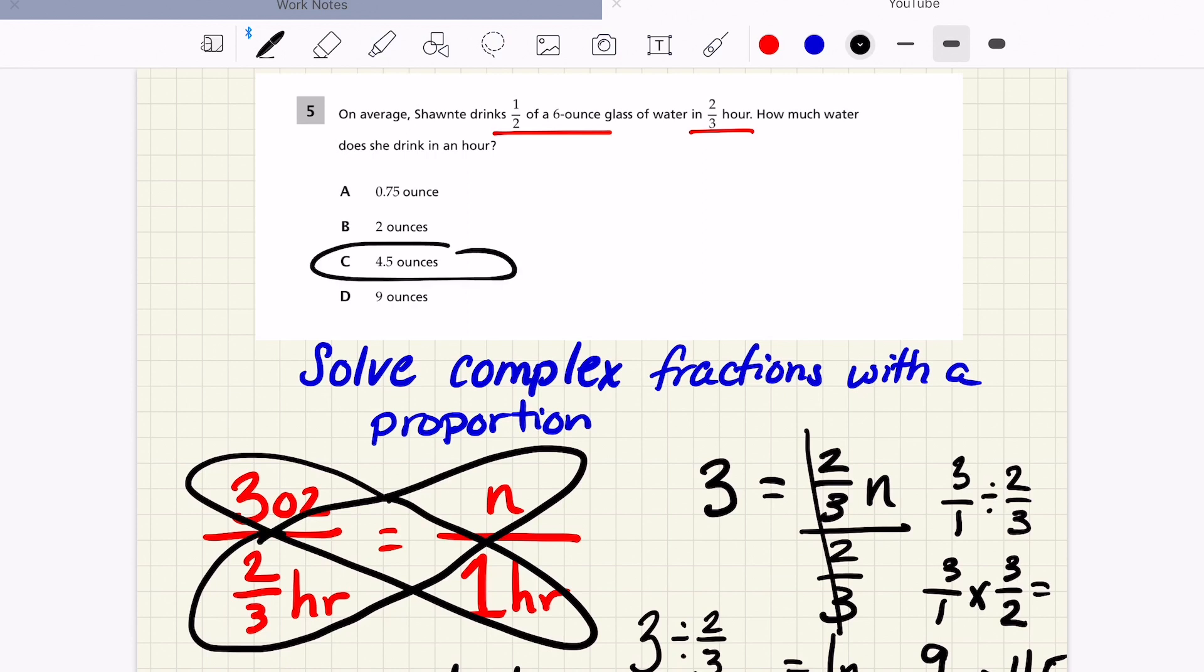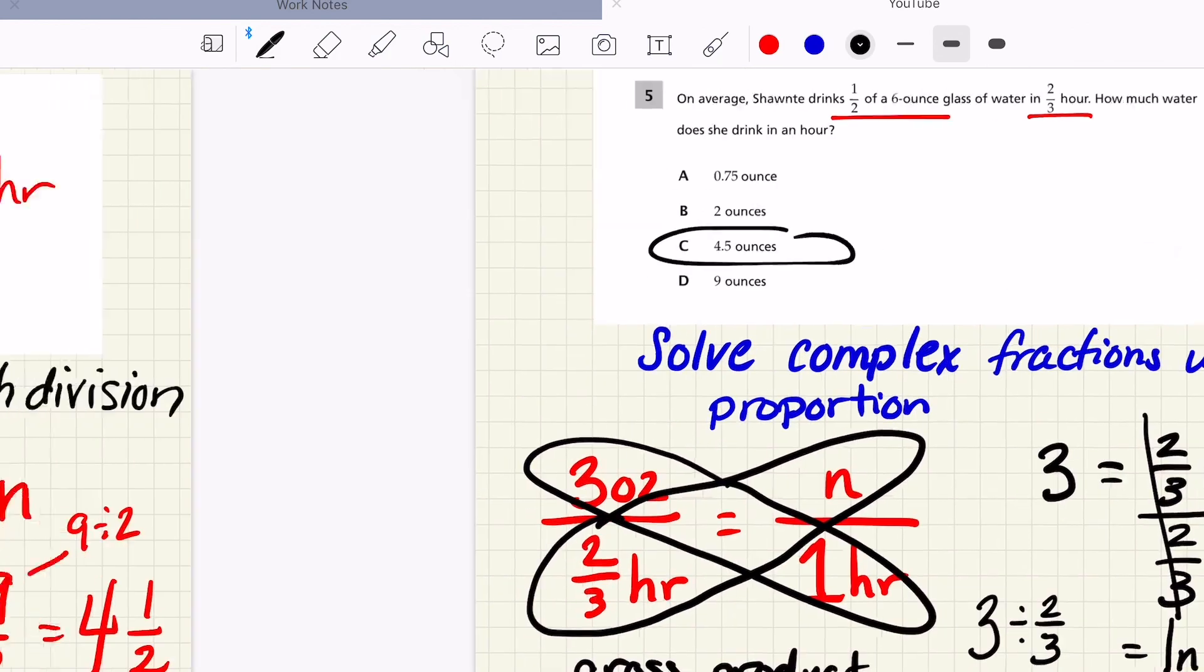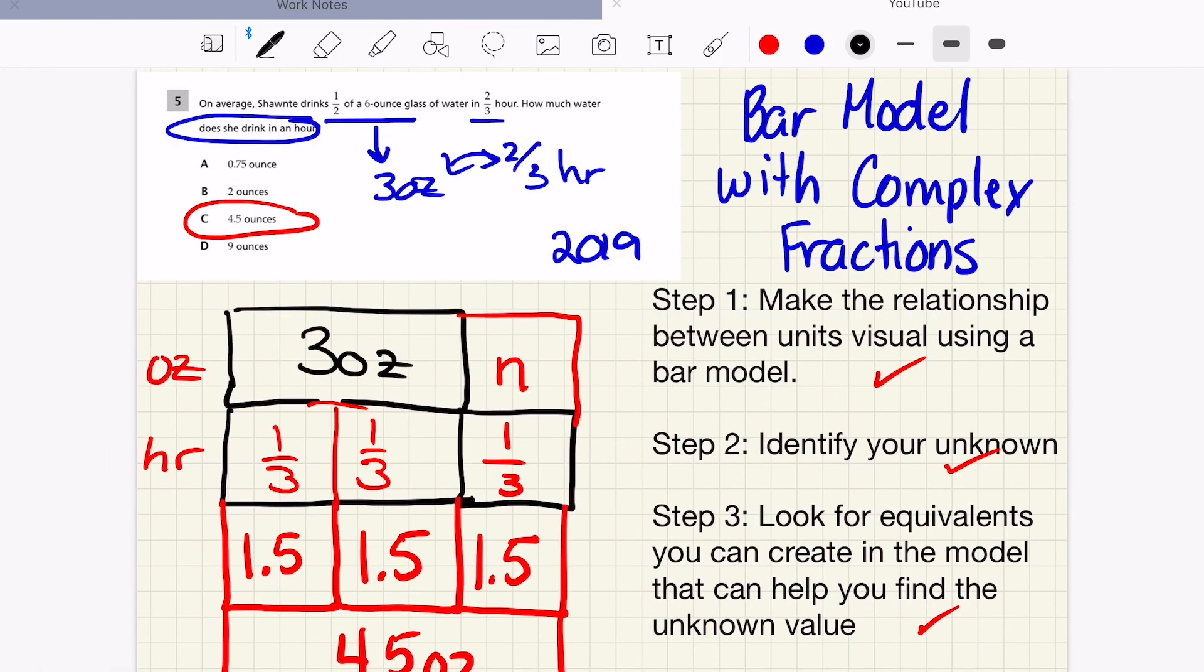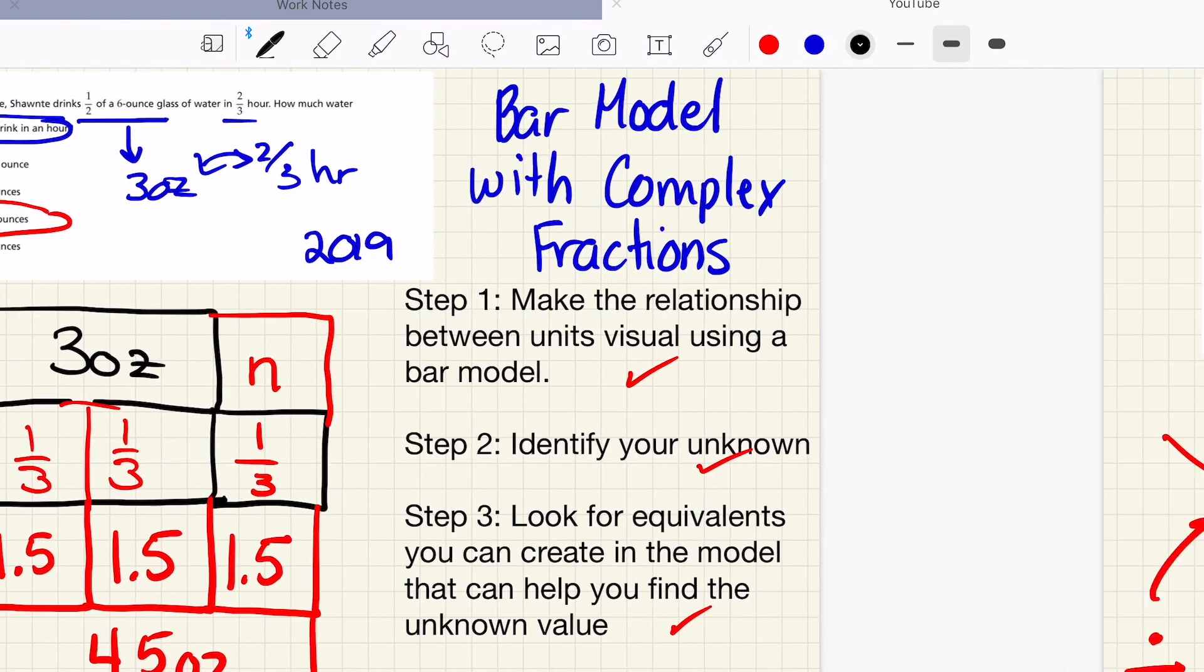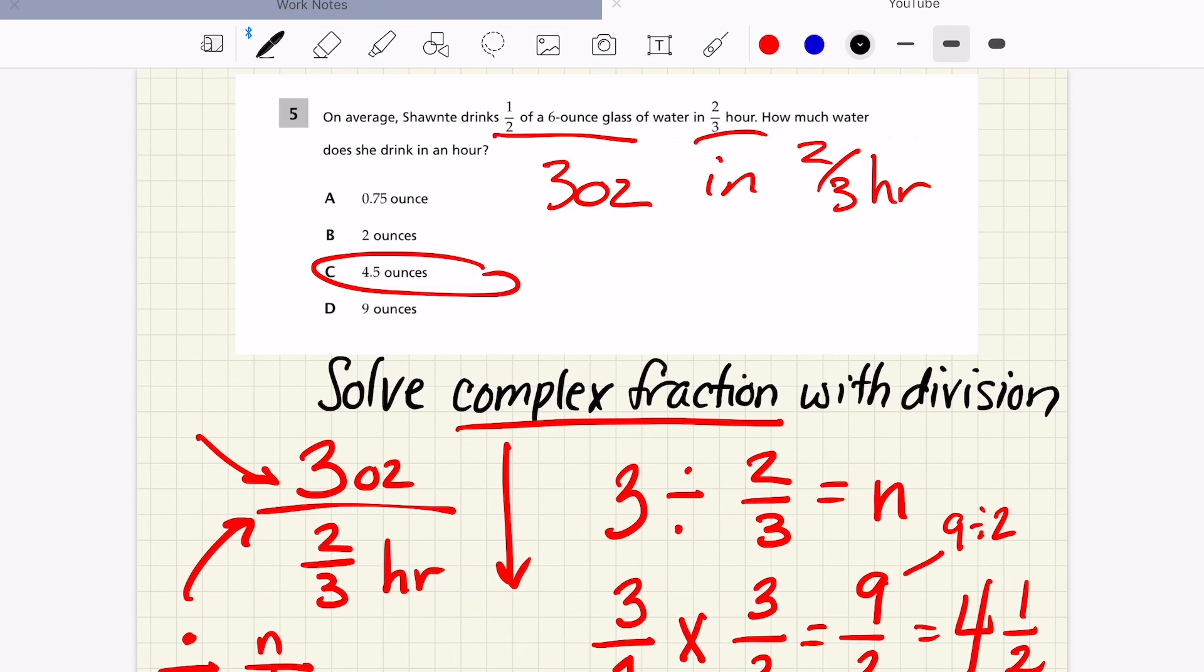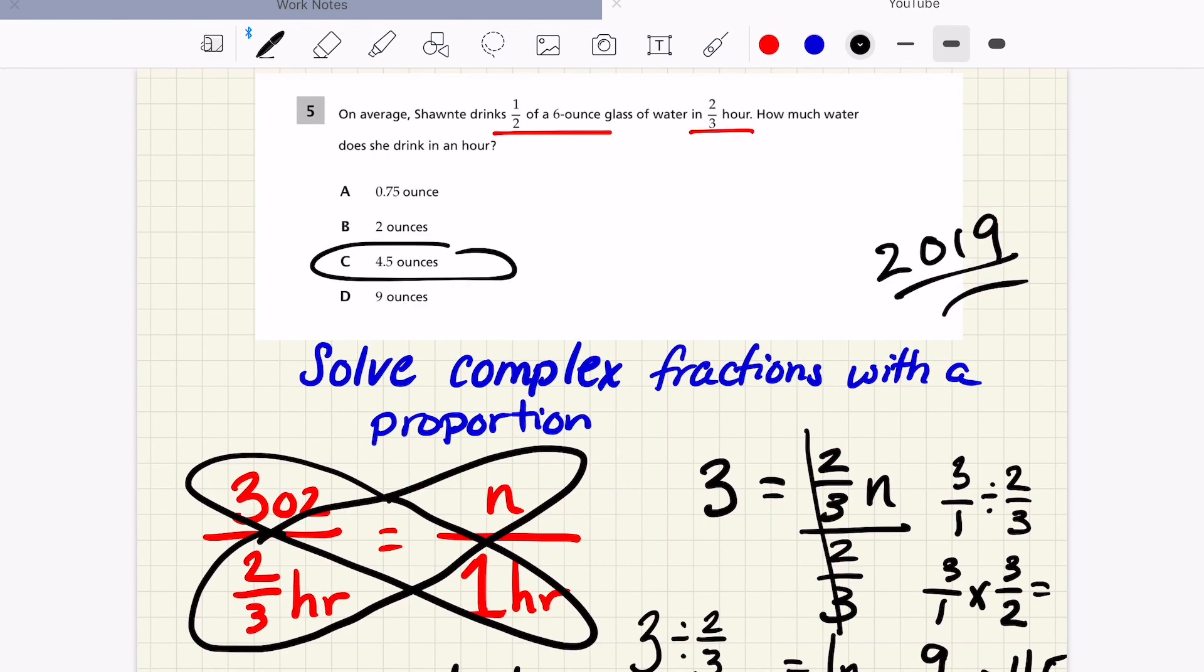So here are three different ways we can solve a problem like this. Again, this is from the 2019 New York State exam. I love that I have different access points. So no matter what kind of learner you are, if you're bad at multiplying, dividing with fractions, that bar model is the one that gives you that first entry. As long as you're looking at the relationships, this problem is about relationships. Some kids are better at just dividing and just seeing that that's what the operation is here. And this works for them. And others need to see it as a proportion to see the relationship.